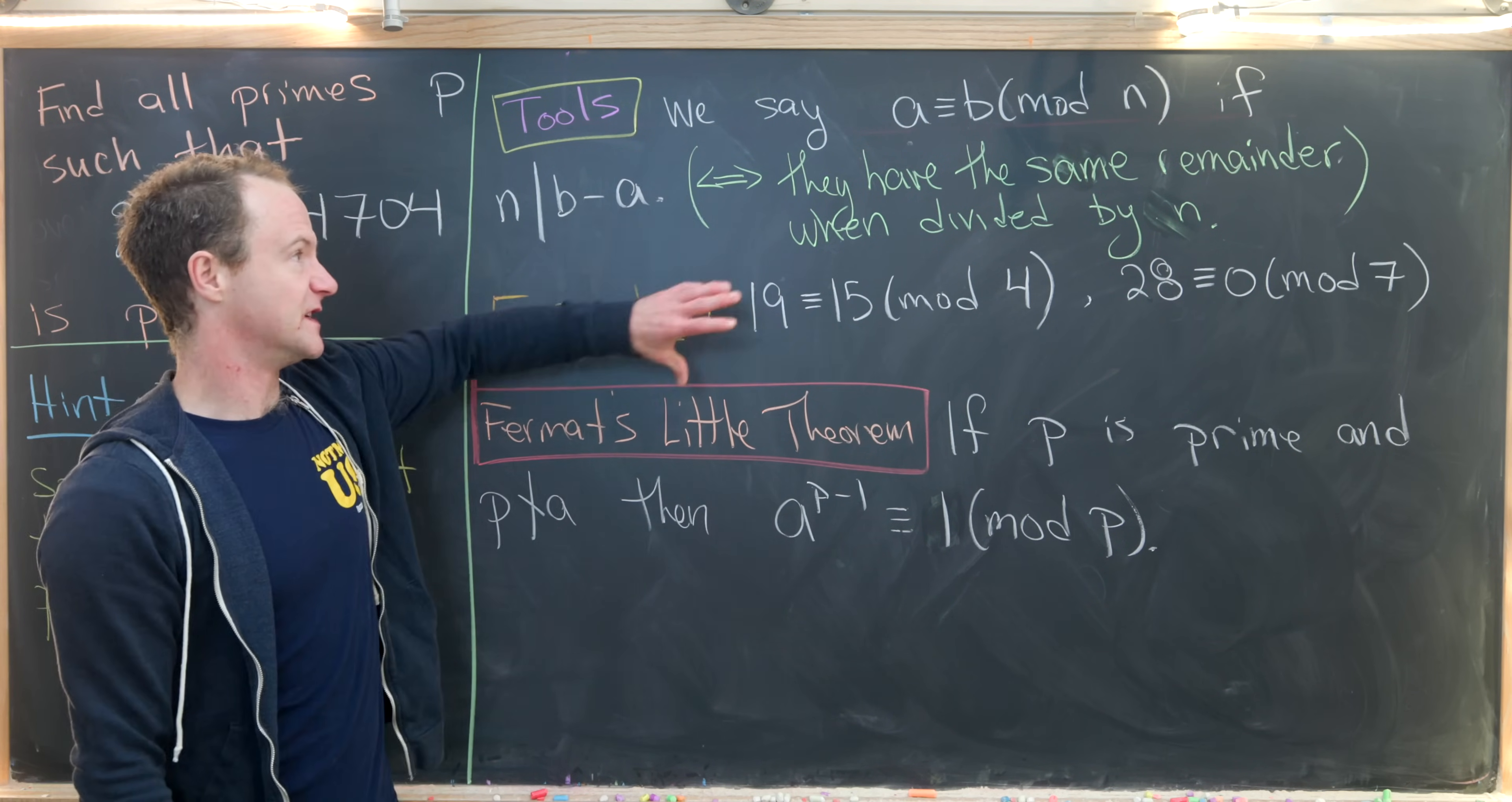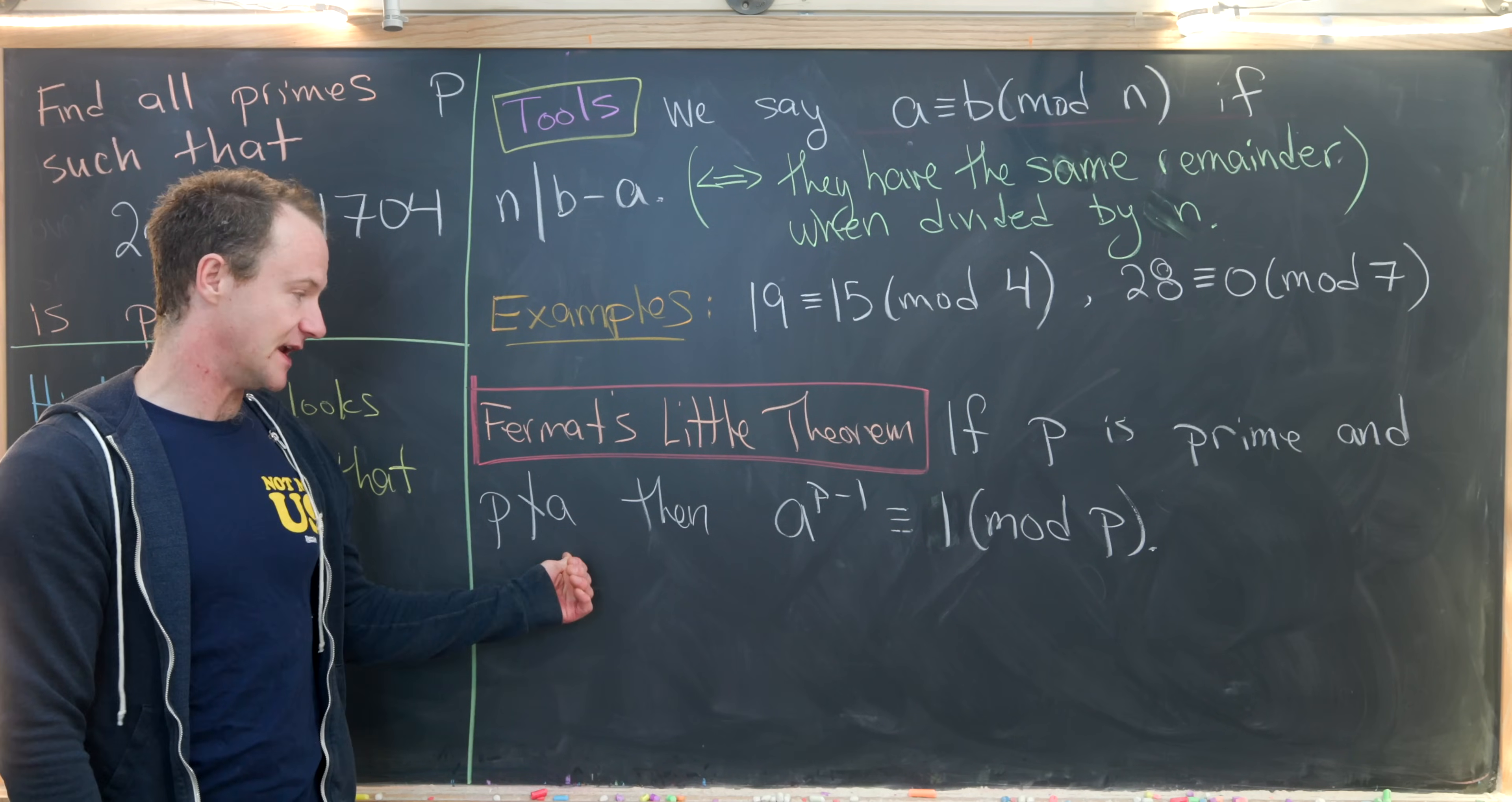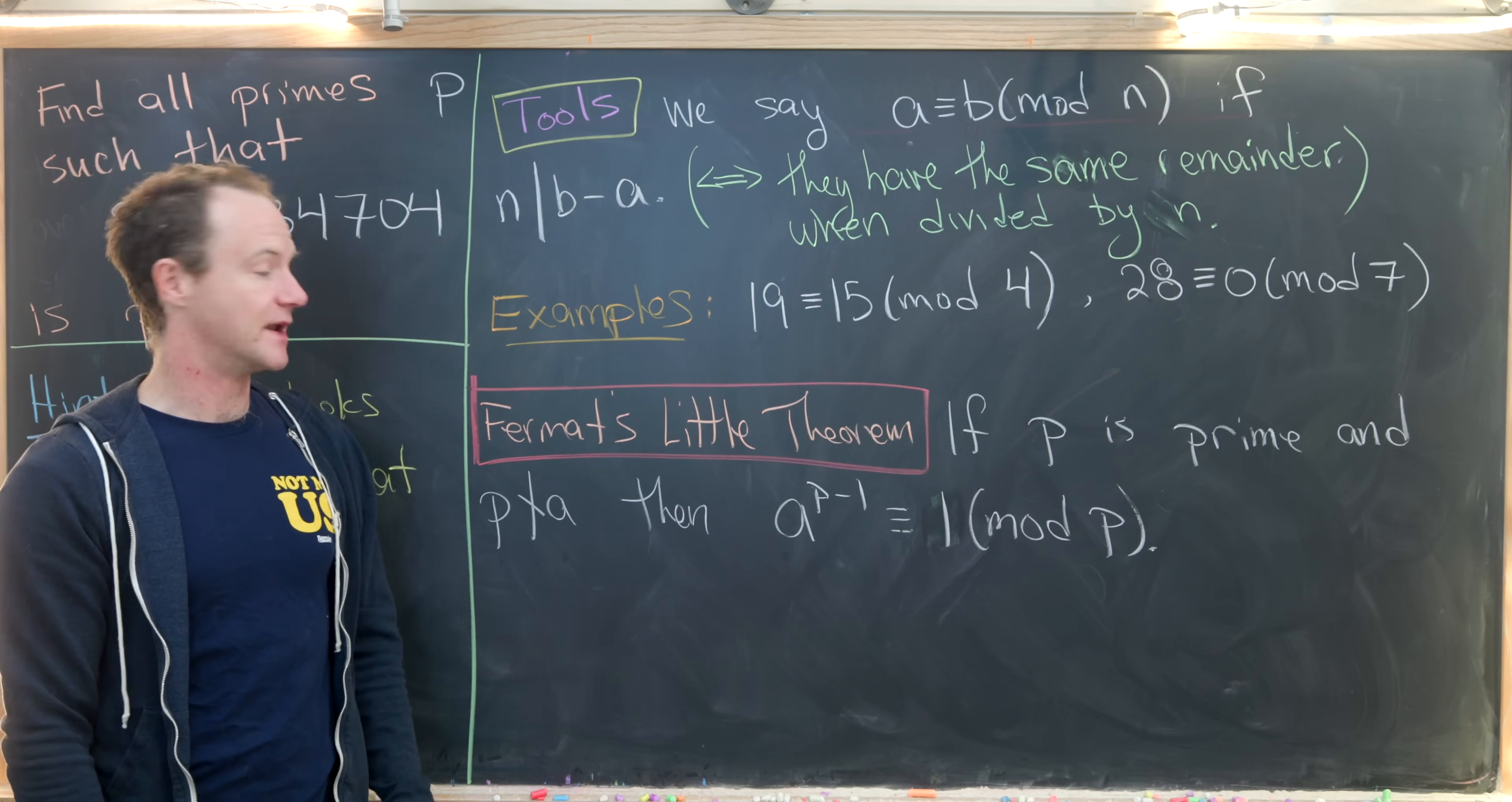And so along with this basic definition, we'll also use something called Fermat's Little Theorem. And that says if p is prime and p does not divide a, then a to the p minus 1 is congruent to 1 mod p.